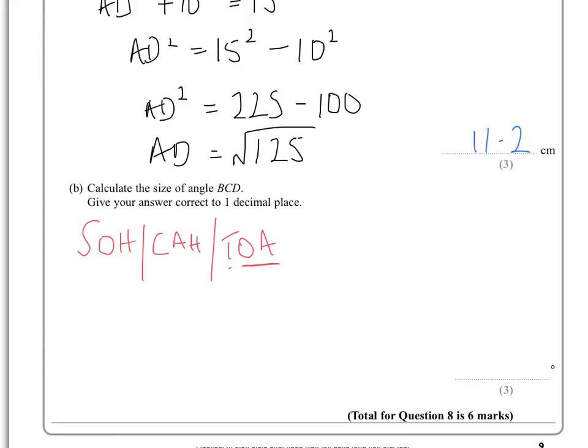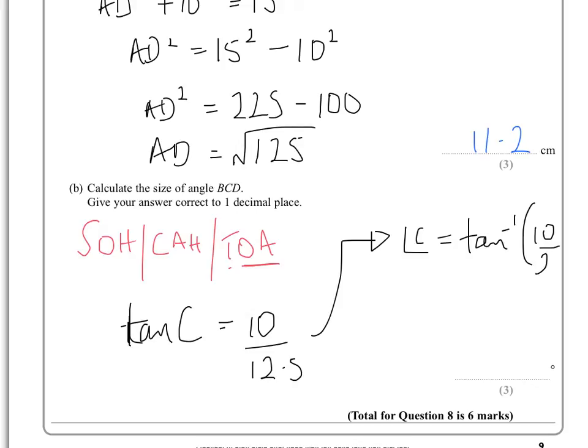So what that tells us is that tan of that angle C will be equal to 10 over 12.5. So that means that the angle C will be equal to the inverse tan, and again you'll just do this on your calculator, of 10 over 12.5.